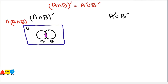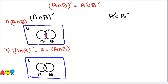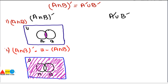Now for A intersection B whole complement, which equals U minus A intersection B, we subtract the intersection portion from the whole set. Drawing the universal set with A and B, we highlight everything except the common portion of A and B. The resulting shaded region — all of the universal set except the overlap of A and B — is the Venn diagram of A intersection B whole complement.